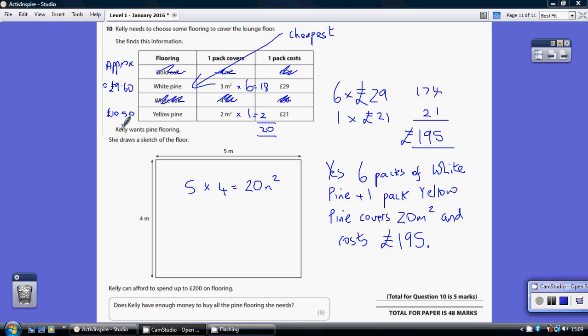Kelly wants a pine floor, pine flooring. So straight away you can reject this oak and this oak. So I would just cross those two rows out straight away. Now Kelly can afford to spend up to £200 on flooring. Does Kelly have enough money to buy all the pine flooring she needs?